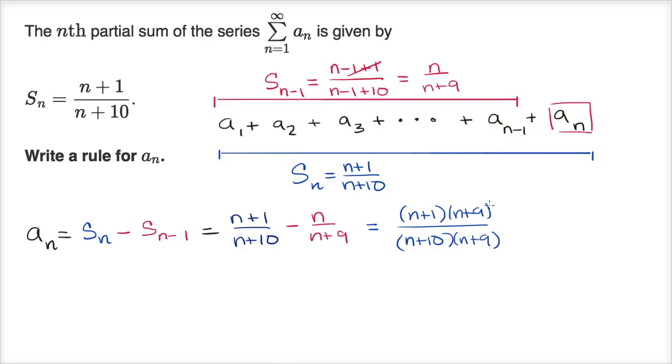And from that, we are going to subtract, let's multiply the numerator and denominator here by (n+10). So we have n(n+10)/(n+9)(n+10), (n+9) times (n+10).